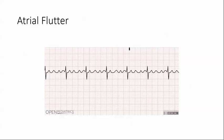Atrial flutter. On an ECG, the P waves lose their distinction due to the rapid atrial rate. The waves blend together in a sawtooth appearance and are called flutter waves, or capital F waves. These waves are the hallmark of atrial flutter.